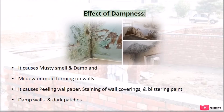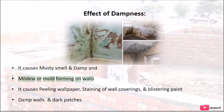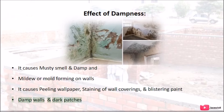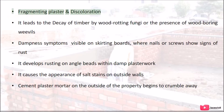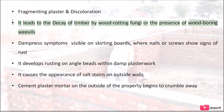Effects of dampness: it causes musty smell, damp conditions, mildew or mold forming on walls, peeling wallpaper, staining of wall coverings, blistering paint, damp walls and dark patches, and fragmenting plaster with discoloration.